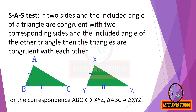In this figure, for the correspondence A, B, C corresponding to X, Y, Z, the vertices are matched accordingly. For this correspondence, triangle ABC is congruent to triangle XYZ. If two sides and the included angle of a triangle are congruent with two corresponding sides and the included angle of the other triangle, then the triangles are congruent with each other. Here triangle ABC and triangle XYZ are taken as the example.